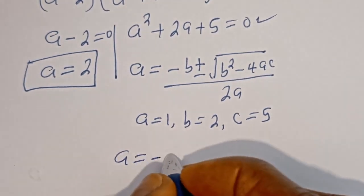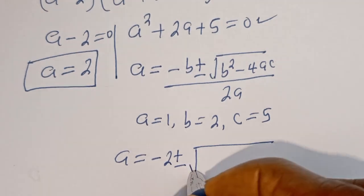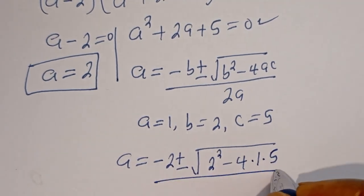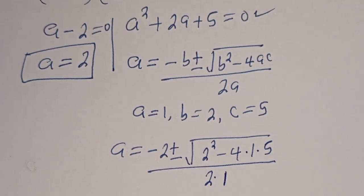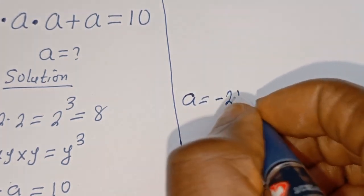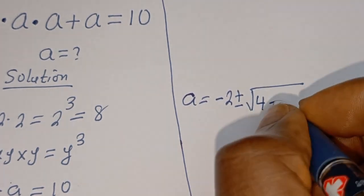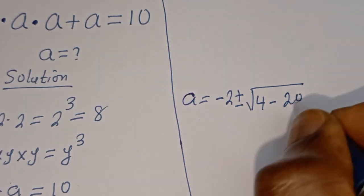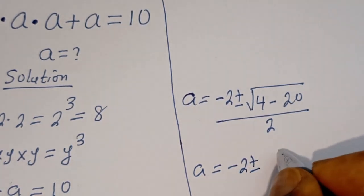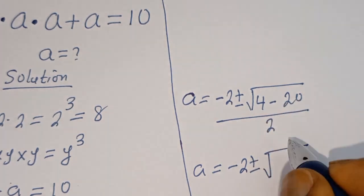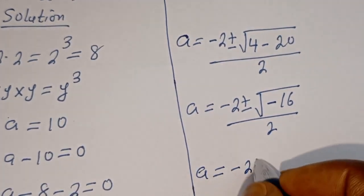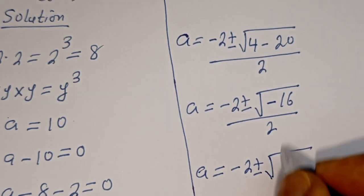So A is equal to minus 2 plus or minus square root of 2 squared minus 4 multiplied by 1 multiplied by 5, divided by 2 multiplied by 1. That gives A equals minus 2 plus or minus square root of 4 minus 20, divided by 2. Then A is equal to minus 2 plus or minus square root of minus 16, divided by 2.